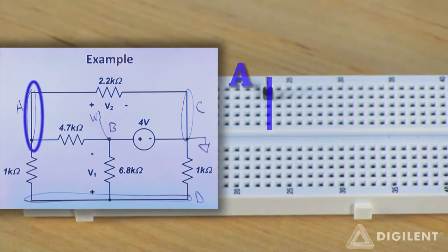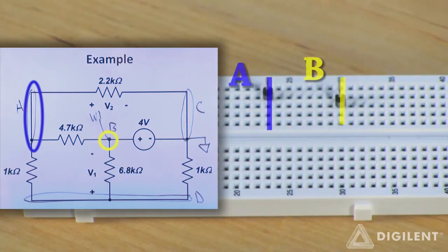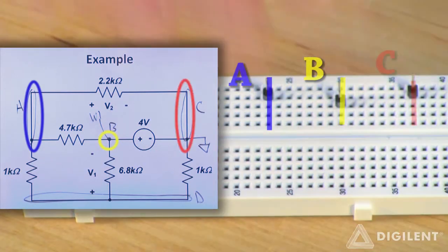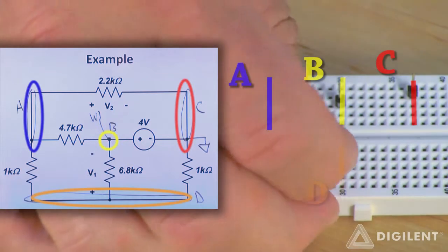This row will be node A, this will be node B, this one's node C, and this node is row D.